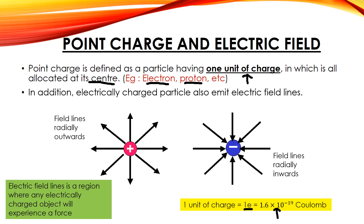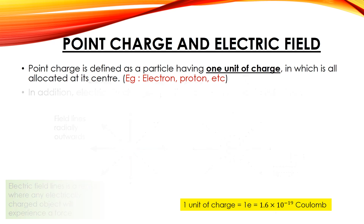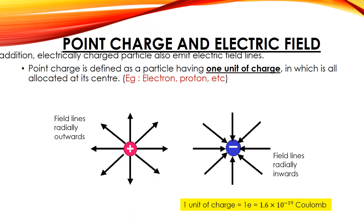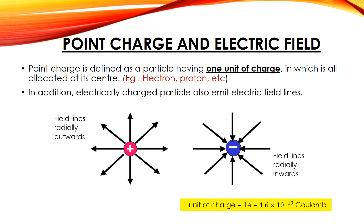Both proton and electron contain one unit of charge. One very important difference is that the proton has a positive polarity and the electron has a negative polarity. Fact number two: an electrically charged particle will emit electric field lines — a very similar idea to gravity, where any object with mass emits gravitational field lines. In this case, electrically charged particles are capable of emitting electric field lines.